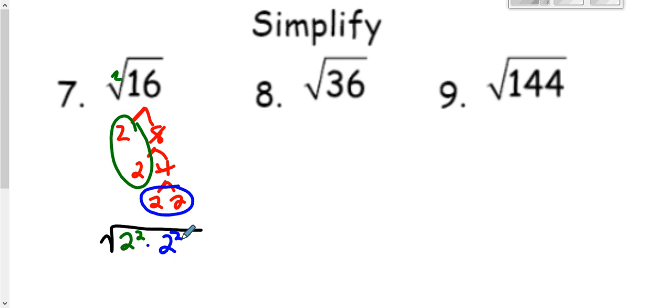And so now I can take a look at this and remember, when our exponent matches our index, as it does, there's our index. So here are both of our exponents, and they are matching our index. We can pull those bases outside. So I can pull this base of 2 outside. This will cancel. And then I can pull this base of 2 outside, and it will cancel. So there's nothing left in my radical anymore. My radical is gone. And 2 times 2 is 4. So the square root of 16 is 4.